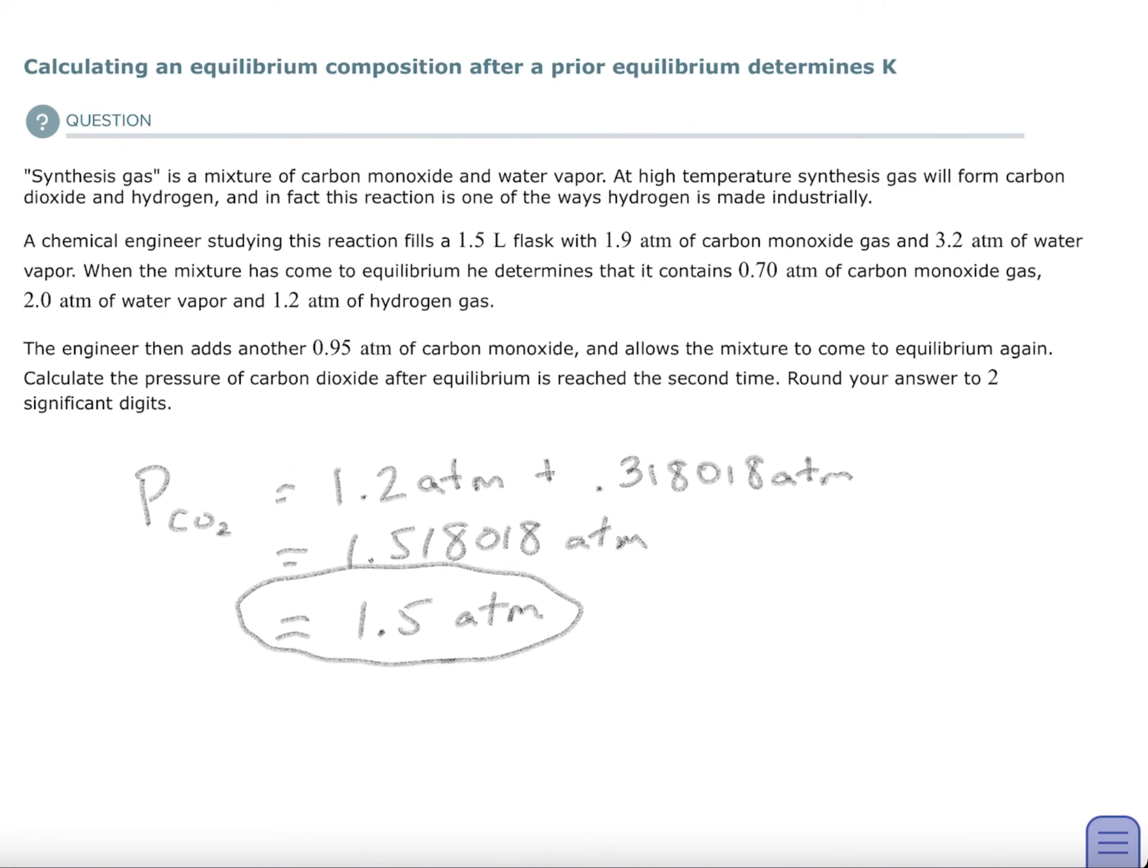So my initial pressure for the carbon dioxide was 1.2. My increase in pressure from the quadratic we just did was 0.318. I add them together, took two significant digits, and this was my answer, 1.5 atmospheres. I would do this problem two times, three times at least to try to make some sense of it because there's a lot of steps, but I hope you're doing well.